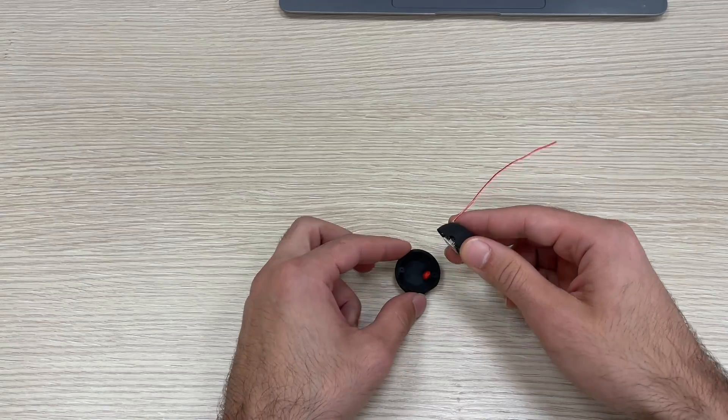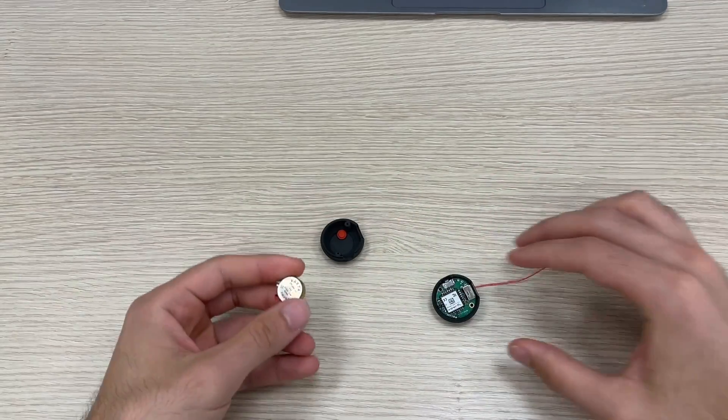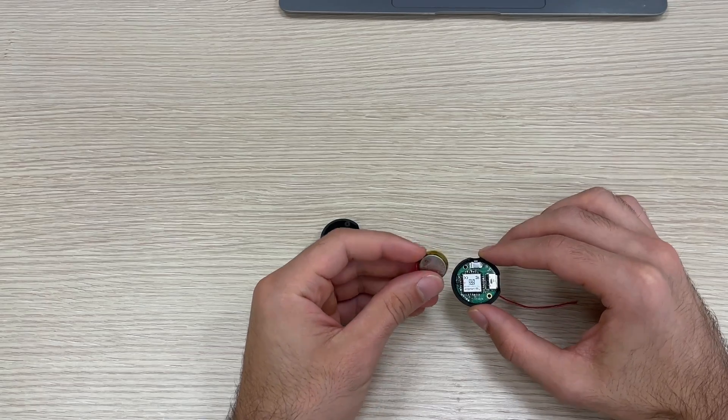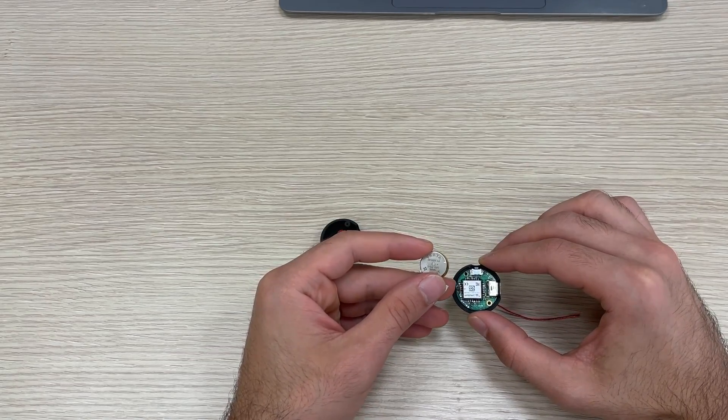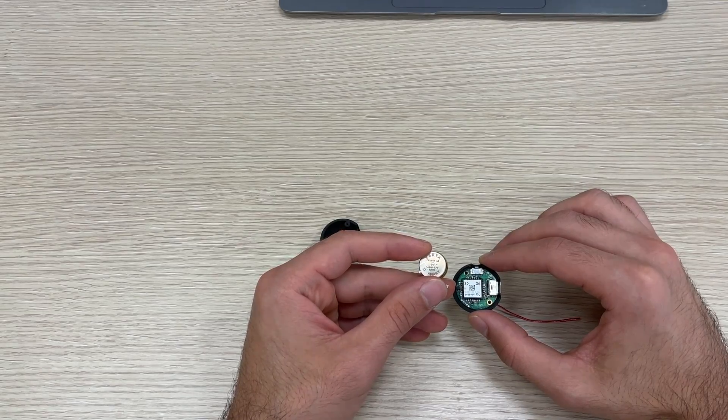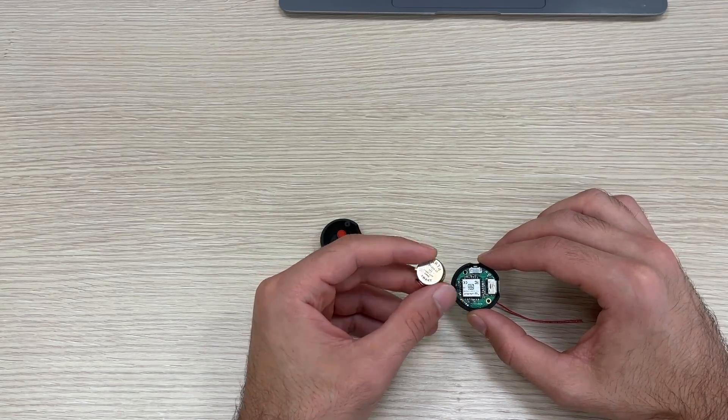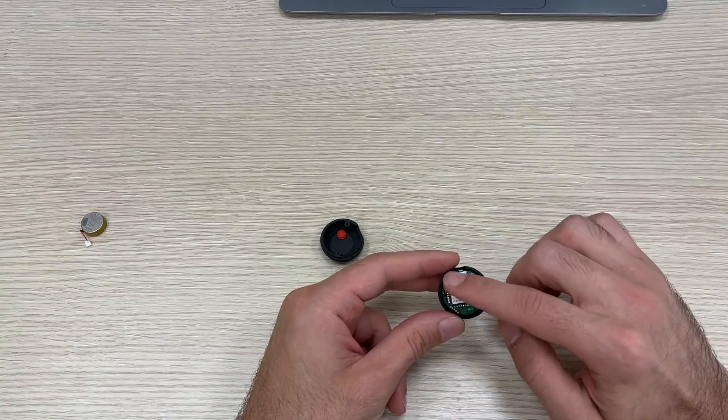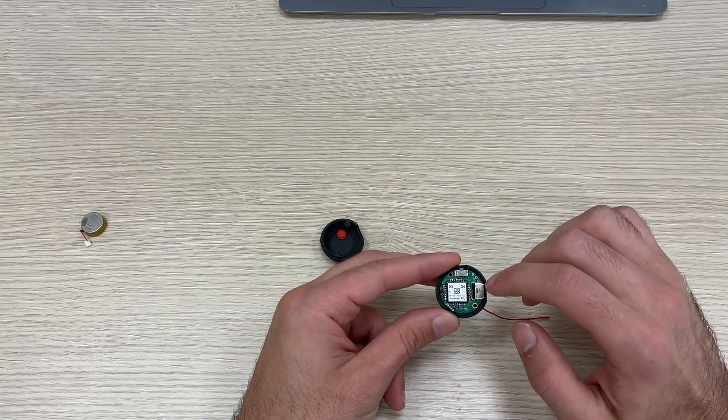Let's take apart the case and on the bottom of the PCB there is a battery located. This is Varta coin power 1654. It is a lithium-ion battery, 0.4 watt hour, and this is the bottom side of the PCB.